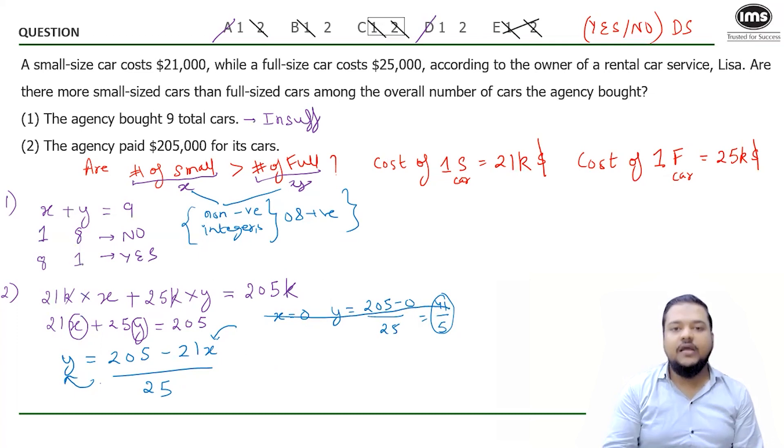So my hit and trial doesn't work here. Now I will do the hit and trial again. Increase the value of X. If I put X equals one, Y will be 205 minus 21, that will be 184. 184 by 25 will again be a fraction. Again be a decimal. So I can say again, this will also not going to work.